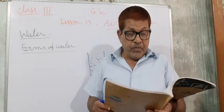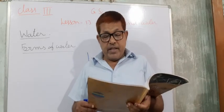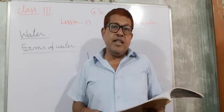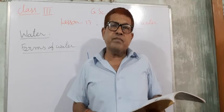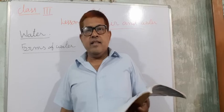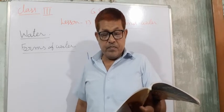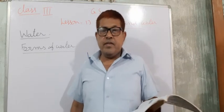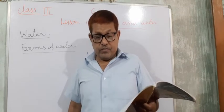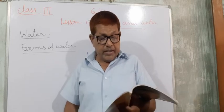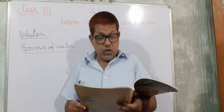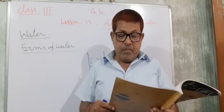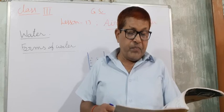We can change water vapor into water again by cooling. If we reduce the temperature, the water vapors are converted into water drops by the process of cooling. Hold a cool steel plate over boiling water — water vapor touches the plate and changes into water drops.